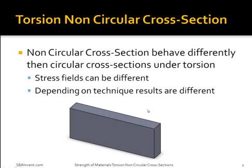The reason why non-circular cross-sections involving torsion are talked about in their own subject instead of with perfectly circular cross-sections is because they behave totally differently. They are also a lot more difficult to calculate than perfectly circular cross-sections, and sometimes, depending on the method that you use, your answer may not be completely accurate.